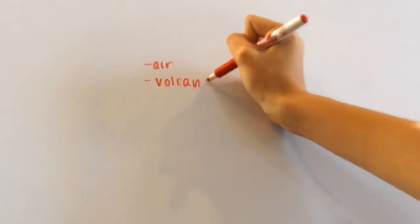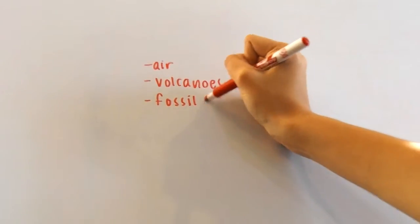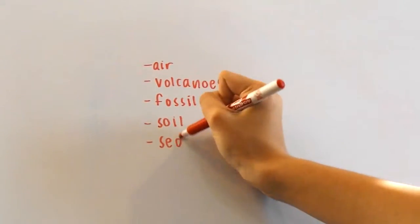Carbon is mainly found in the air, volcanoes, fossil fuels, the soil, and sediments in ecosystems with water.